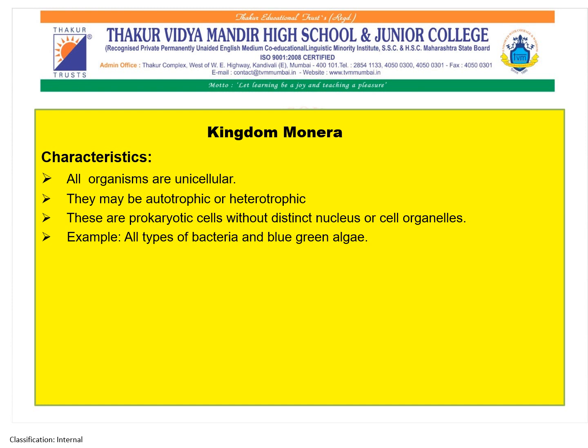Coming to the first kingdom, that is Monera — all the organisms under Kingdom Monera are unicellular. They may be autotrophic or heterotrophic. These are prokaryotic cells without a distinct nucleus or cell organelles. Examples of Kingdom Monera are all types of bacteria and blue-green algae.